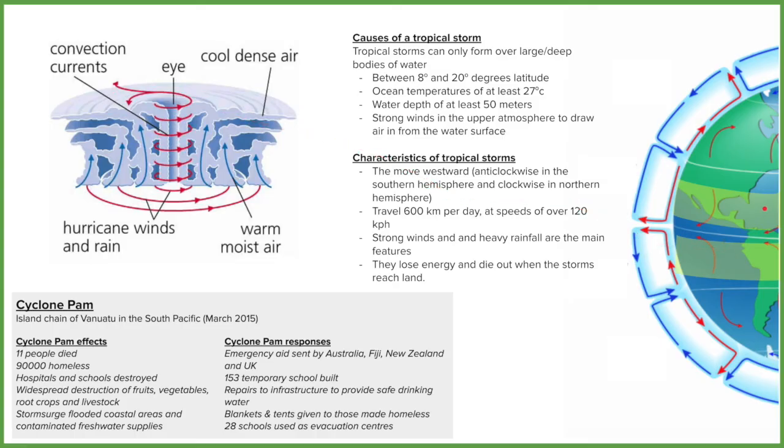So a hurricane that is moving through the Atlantic Ocean and let's say it moves over Florida, as soon as it moves onto land you've removed its energy source so it's going to lose energy over time until it dissipates from being hurricane to an extra tropical storm to just being a storm.